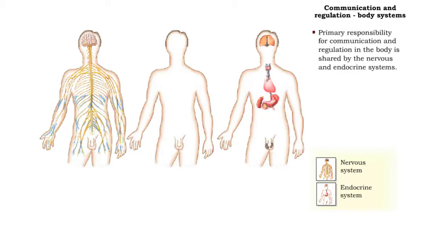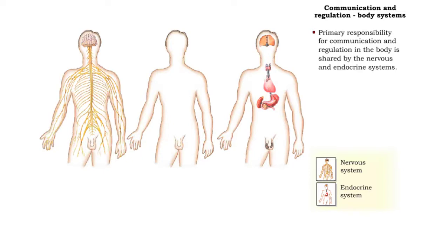The nervous system provides a framework for sensory, integrative, and motor functions. The endocrine system secretes powerful chemicals called hormones that regulate body functions.